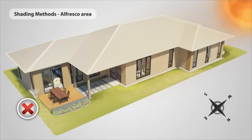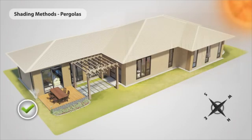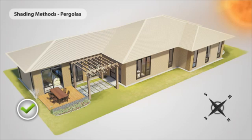Covered open spaces, commonly known as al fresco areas, should be placed on the south side of the house. This leaves the north side open to receive the winter sun. A covered area on the north side means sunlight cannot penetrate into the house, reducing warmth and natural light. You can still have private outdoor open space to the north of the home, but it should only have temporary shading which can be withdrawn in the winter time.